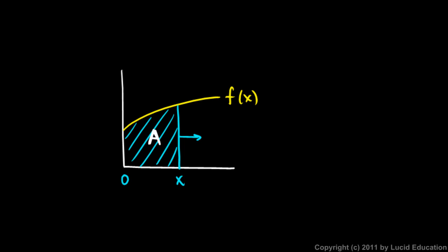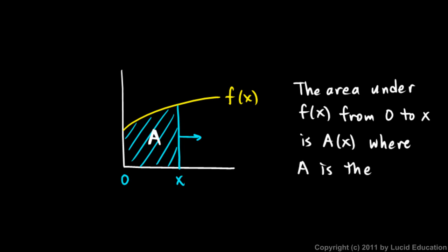So as x moves to the right, that area A increases. Write this in your notes: the area under f(x) from 0 to x is this function A(x). That function, that value of A, the area itself, depends on where x is. So A is a function of x. That's A(x), where A is the antiderivative of f.